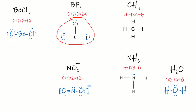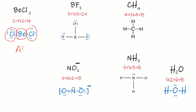For VSEPR theory, we have to find the type of the molecule. For the VSEPR model, we write the central atom as A. And how many bonded atoms are attached to this central atom? We write it as B with a subscript — B means bonded, and the number means how many atoms. So the type of BeCl₂ is AB₂.